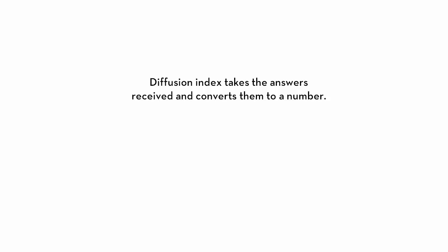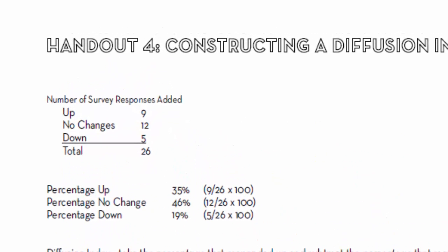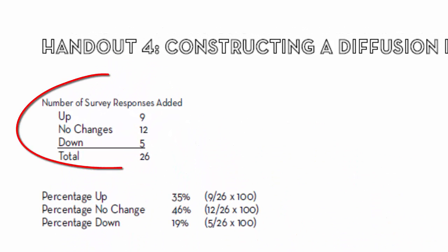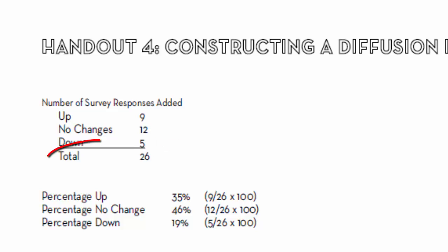So let's do the math. In our example, the first thing that you do is add up the number of survey responses. You have 9 people that answered activity was up, 12 answered there was no change in economic activity, and 5 said that activity was down. That's a total of 26.